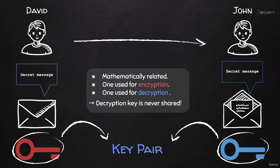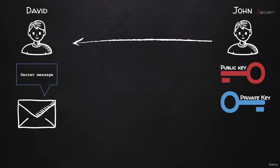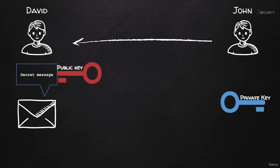If the decryption key is never shared, how is this going to work? Let's have a closer look. David wants to send a message to John with the content 'secret message.' Before encrypting it, John is going to create a key pair — a public key and a private key. These keys are mathematically linked, and John is going to send the public key to David. The public key can be shared with anybody — you can make it public on the internet, on key directories — because it cannot be used to determine the private key. Therefore, it's completely safe to share the public key.